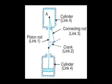The pendulum pump mechanism is an inversion of a single slider crank chain consisting of four links: Link 1 - piston rod, Link 2 - crank, Link 3 - connecting rod, Link 4 - cylinder. In this mechanism, the inversion is obtained by fixing the cylinder.